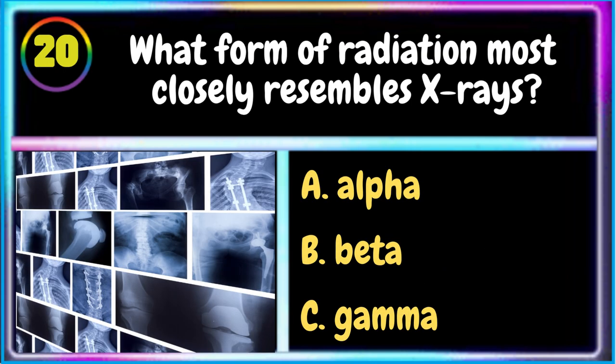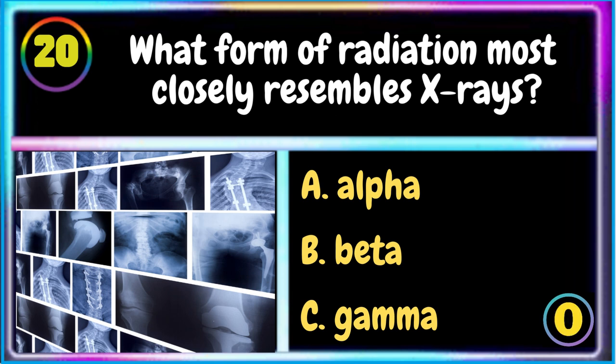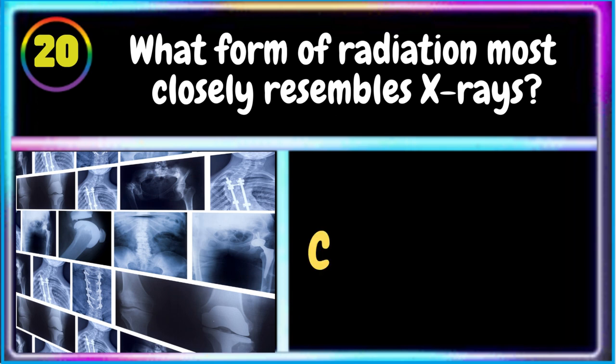20. What form of radiation most closely resembles x-rays? A. Alpha B. Beta C. Gamma. C. Gamma is the correct answer.